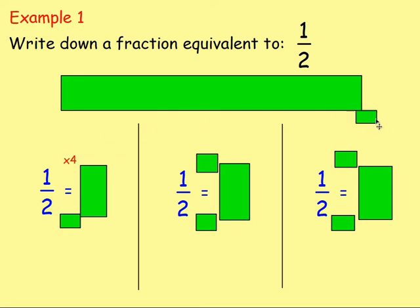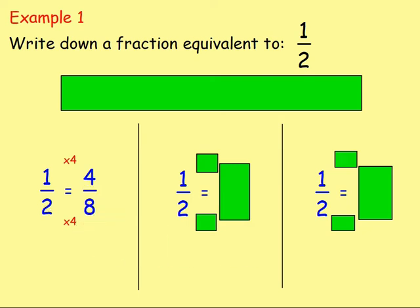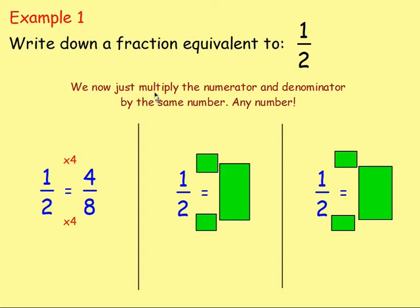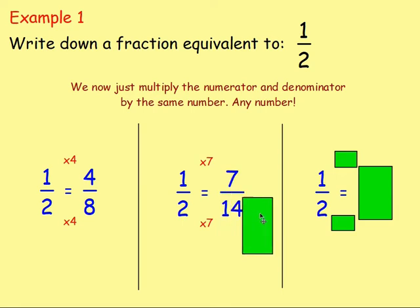Four! Okay, so we want to multiply the top by four and the bottom by four. One times four gives you four, and two times four gives you eight. You know that four out of eight is the exact same as a half - so that is an equivalent fraction. Really, all you want to do is multiply the numerator and denominator by the same whole number. Going for seven: one times seven gives you seven and two times seven gives you 14. If you've got seven out of 14 in a test, you know that is the same as one half - you've created an equivalent fraction.